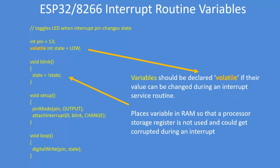Next let's look at a straightforward sketch which is an interrupt-based sketch that flashes an LED when the GPIO pin changes state, either 1 to 0 or 0 to 1. What happens is the function called blink is called when the interrupt takes place and that inverts the state of a variable called state. To make sure it's a reliable interrupt routine, you've got to make sure that you declare the interrupt variables — in this case state — as volatile.